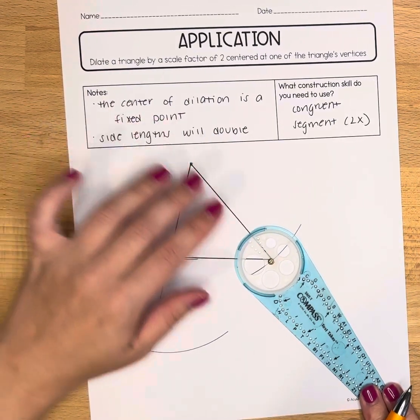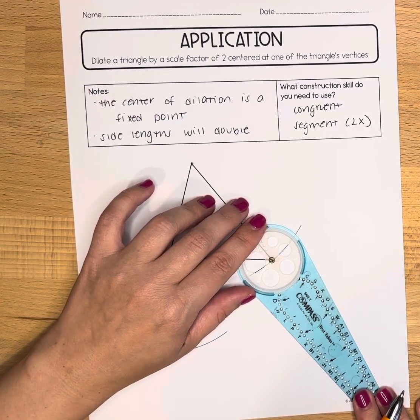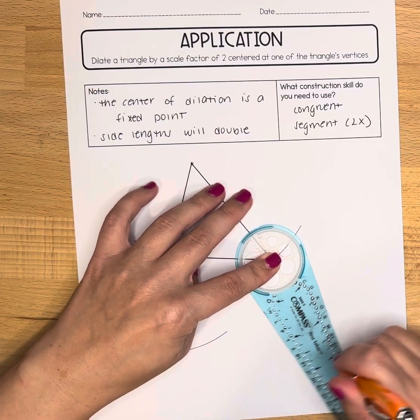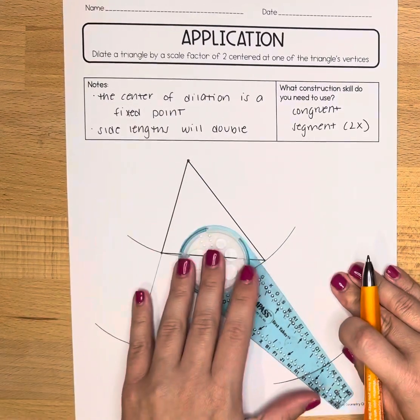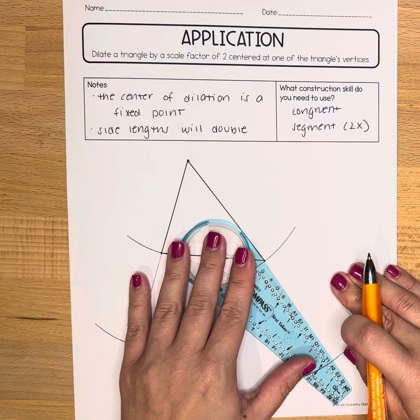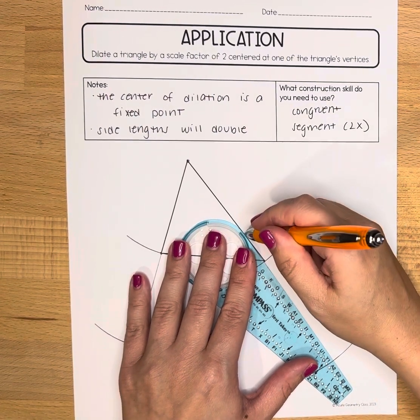Slide your compass over to it, make a new arc, and then use your compass as a straight edge to extend that initial side.